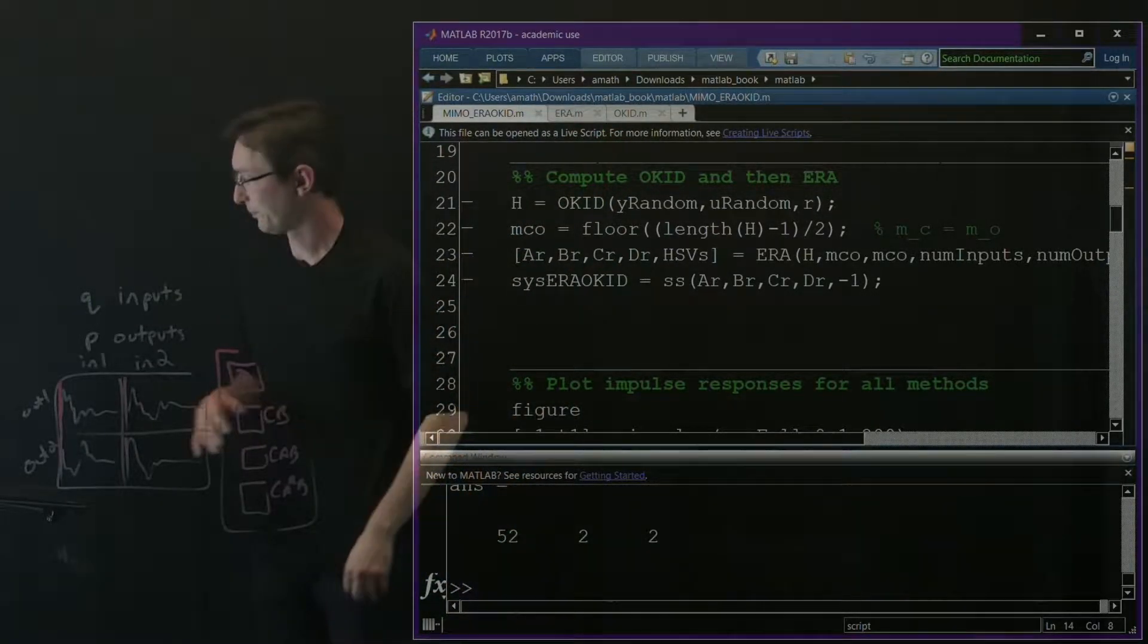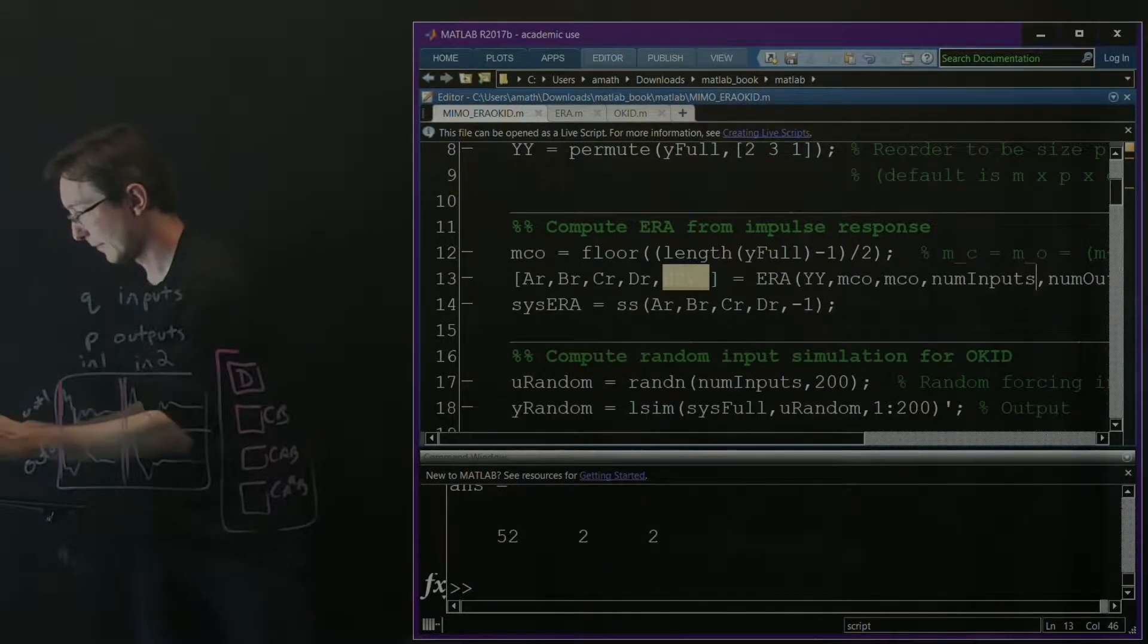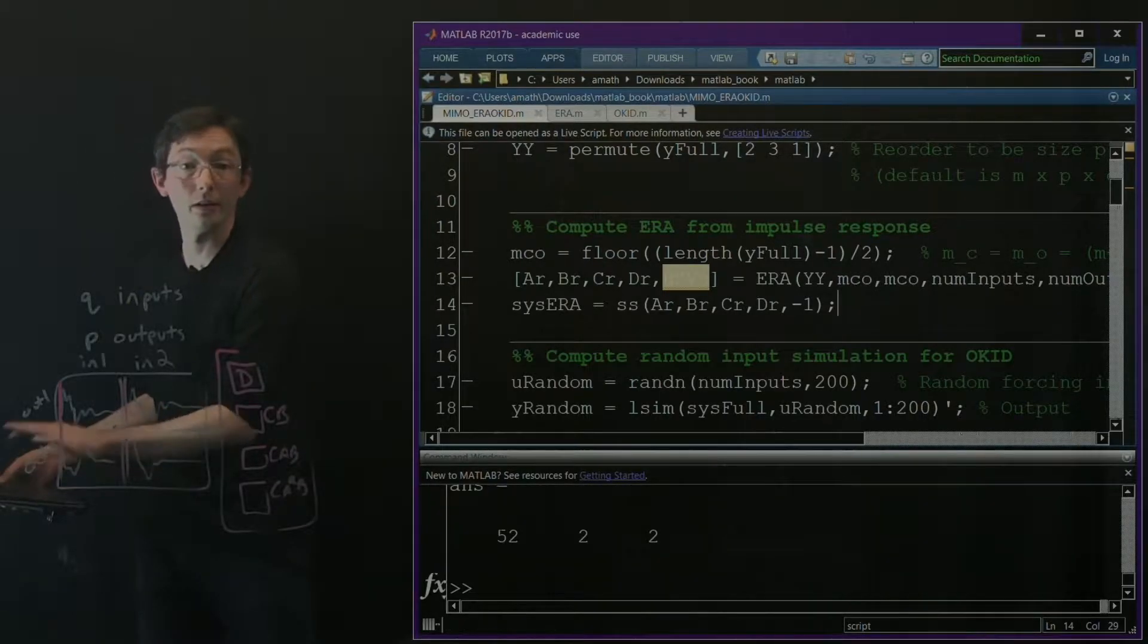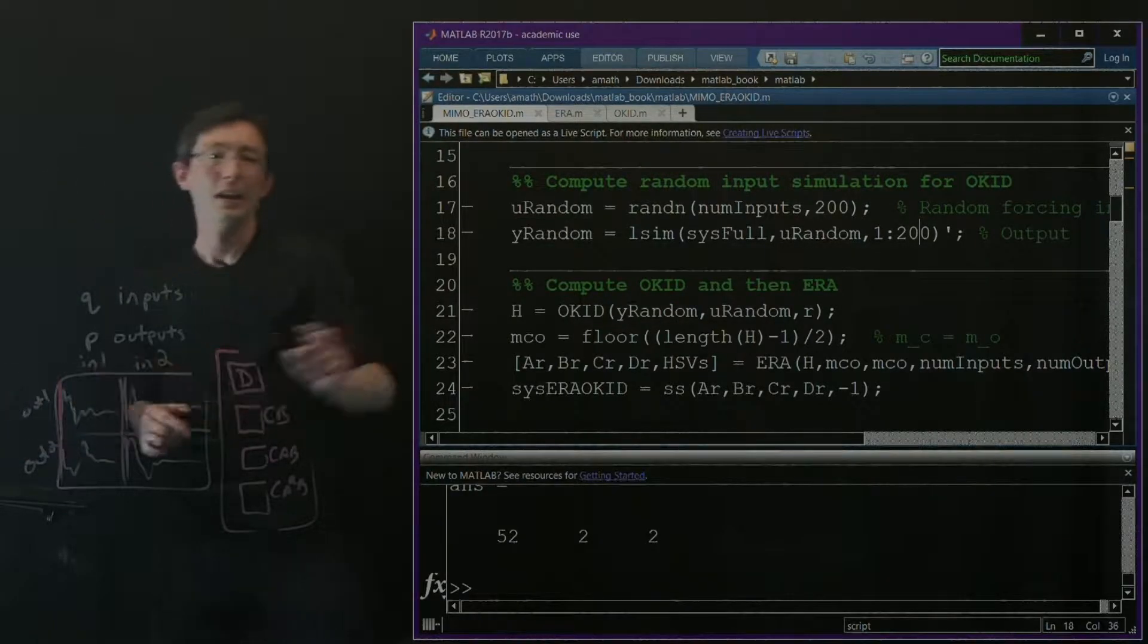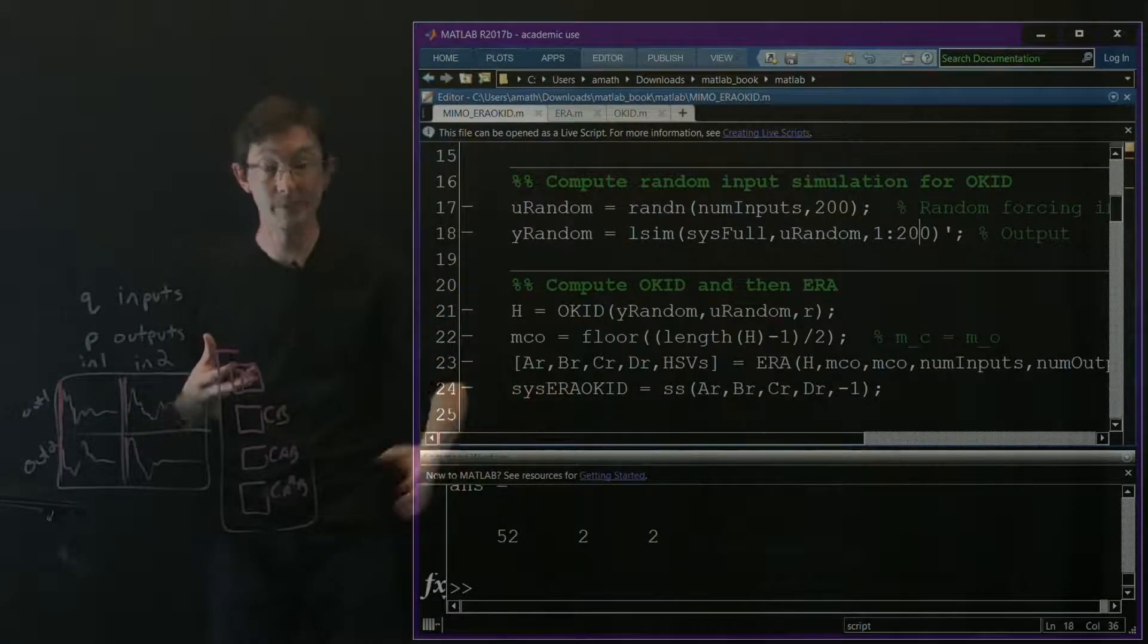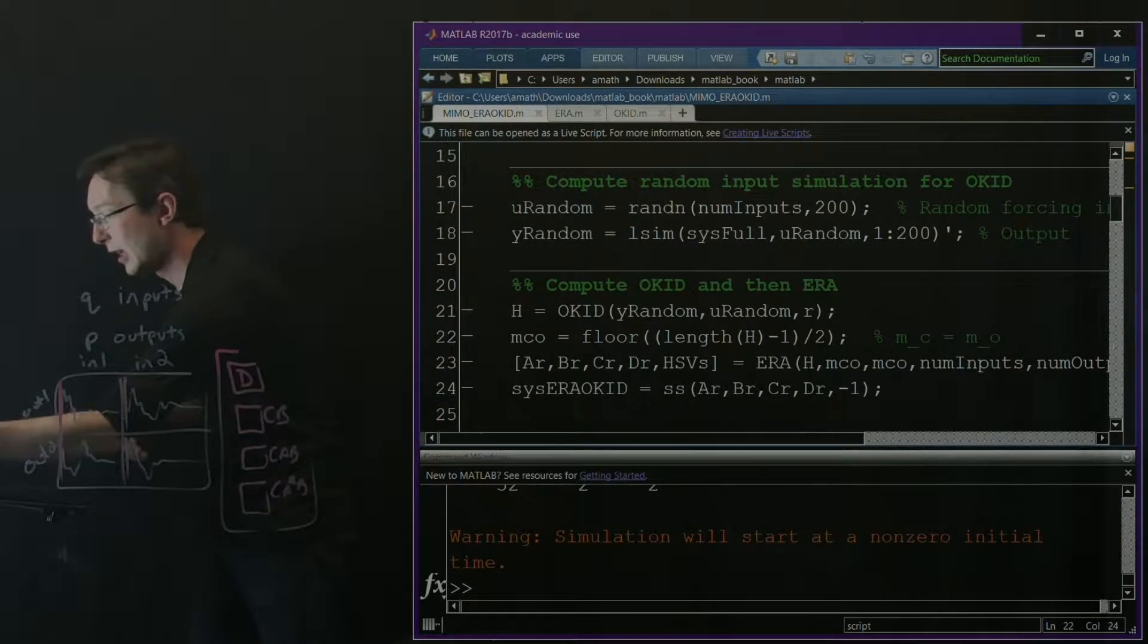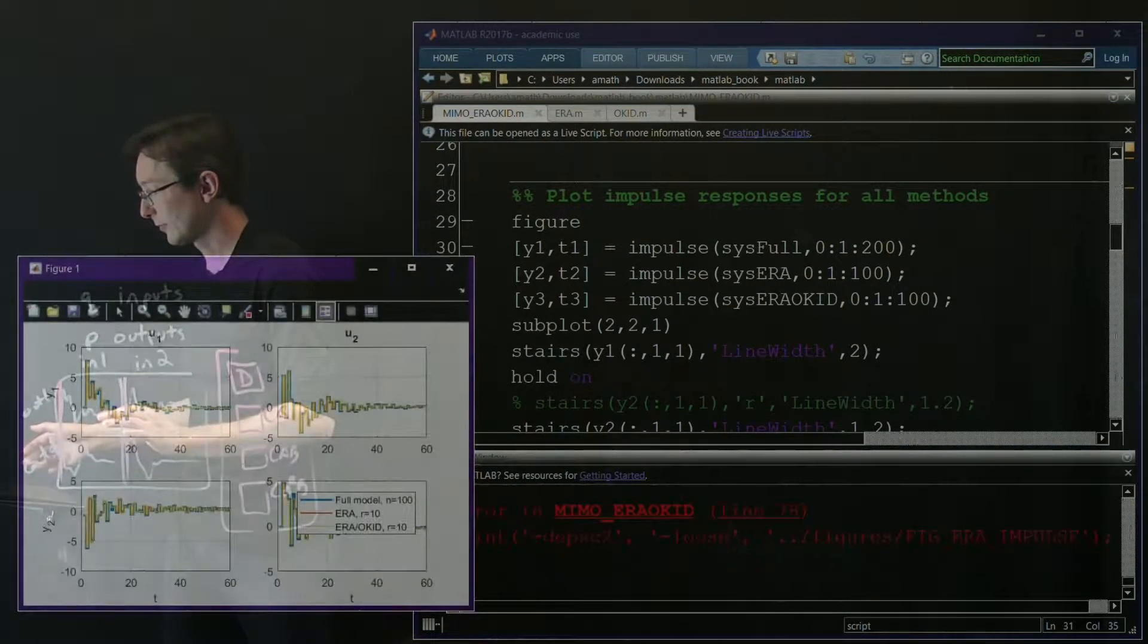Pretty simple. Let me make sure I actually run everything. I'm going to run this - good, we have our data. I'm going to run the ERA model. I've generated an ERA model. Here I actually have to manufacture this random input-output data, but in the real world you'd collect this from your experiment. Okay, and I do OKID. Good.